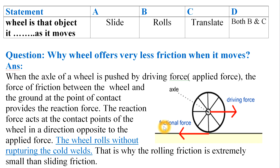When the axle of a wheel is pushed by the driving force, the force of friction between the wheel and the ground at the point of contact provides the reaction force. You can see that friction force is providing reaction force in the opposite direction to the driving force. The reaction force acts at the contact point of the wheel in the direction opposite to the applied force.